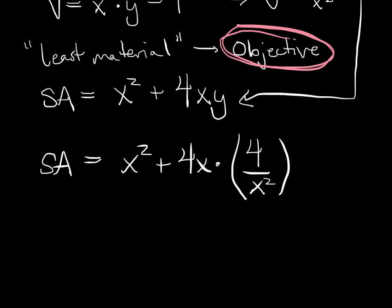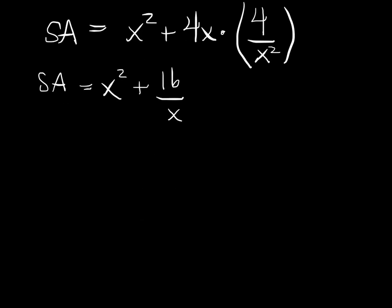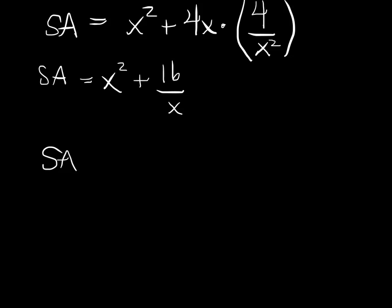Now, last thing we do, we're going to take the derivative of this thing and set it equal to zero. So what do we have? We have x squared plus 16 over x. That's our surface area. We want the derivative of that. 2x. This is x squared plus 16x to the minus 1. So we'll get minus 16x to the minus 2. Set that equal to zero.